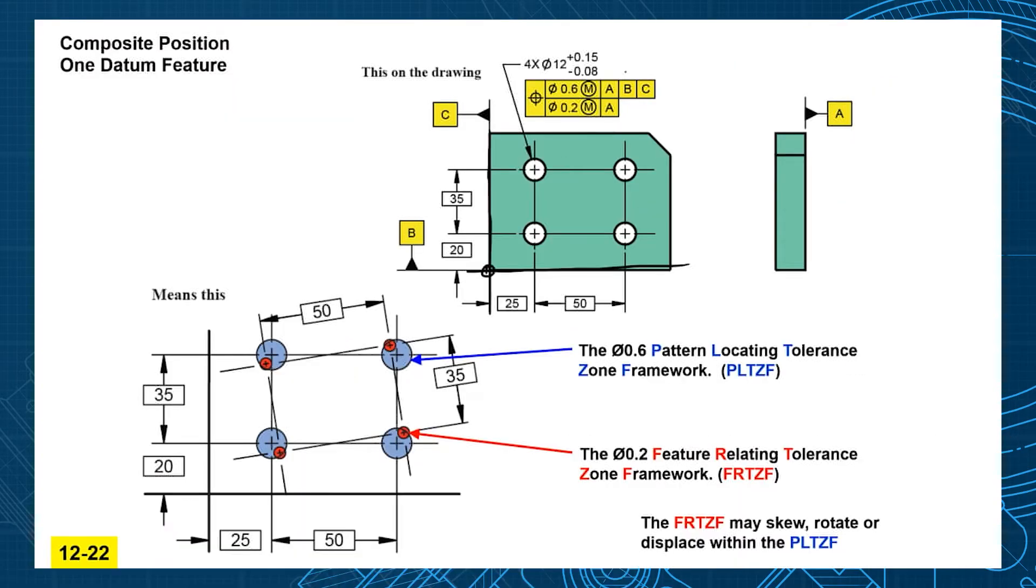These holes have two tolerances, and the top one reads just like a normal position tolerance. This would be position within 0.6 to the datums. But sometimes the hole to hole is more important, so we refine that with a tighter 0.2.